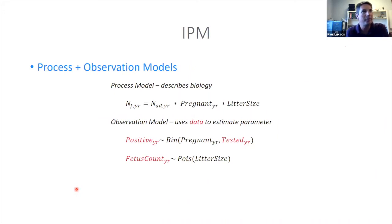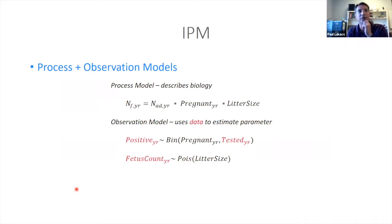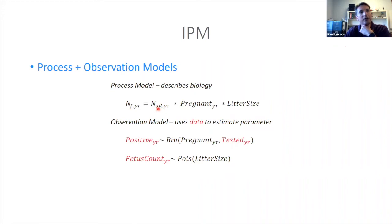Let's step slowly through a basic piece of an integrated population model, starting on the newborn class of animals. We can describe a really basic birth model as a component of our IPM. We have our newborns as a function of the adults, the pregnancy rate, and the litter size — simply: number of adults times the proportion of adults that are pregnant, times the litter size, gives you the number of young.